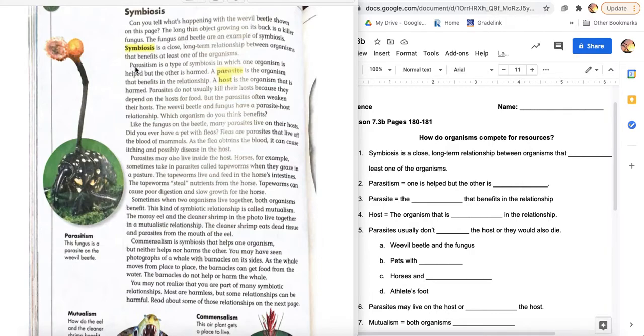Example number one type of symbiosis. Parasitism is a type of symbiosis in which one organism is helped, but the other one is harmed. Number two in your notes. A parasite is the organism that is benefited in the relationship. Number three in your notes. A host is the organism that is harmed in this relationship. Number four in your notes.